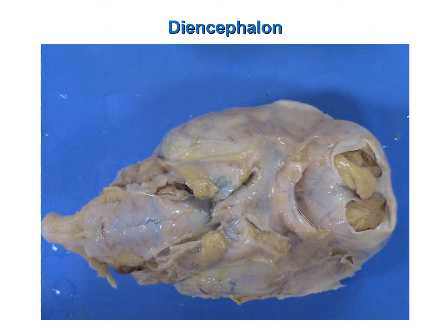You should also be able to identify the optic chiasma and the pituitary gland on the underside of the sheep brain. Here we have the optic chiasma; you can see the two nubs of the optic nerves coming in and crossing. You can't see the remainder of it because of the dura mater.